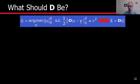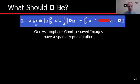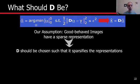Remember what we are trying to solve. We are solving this equation: this is the dictionary, this is the data, and we already talked a lot about alpha — the sparse representation of the data using the dictionary. So what should the dictionary be? The assumption in image processing is that images behave in a sparse fashion, and we have already seen examples of that using JPEG or even this exaggerated example of putting all the images as part of the dictionary.